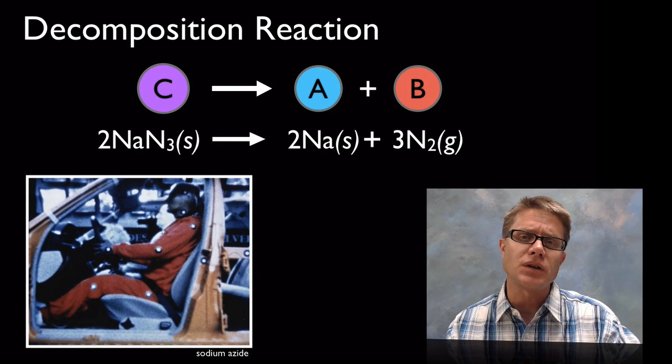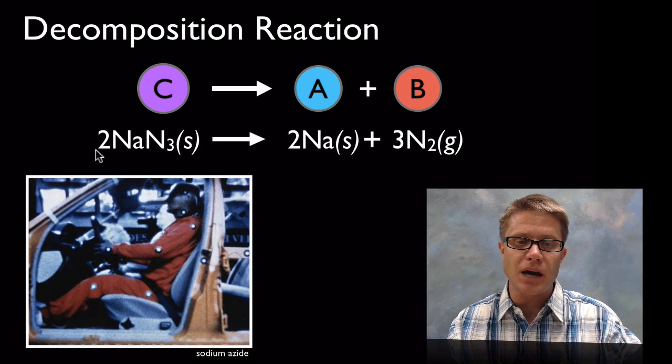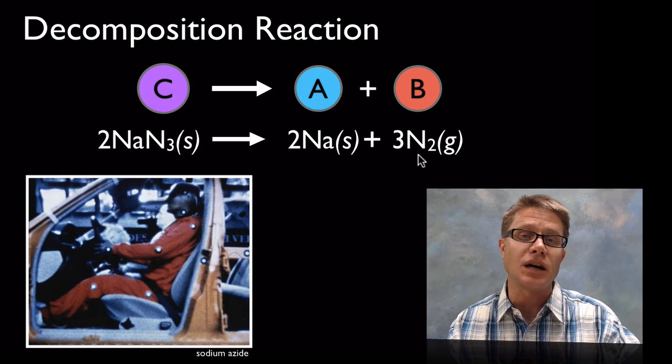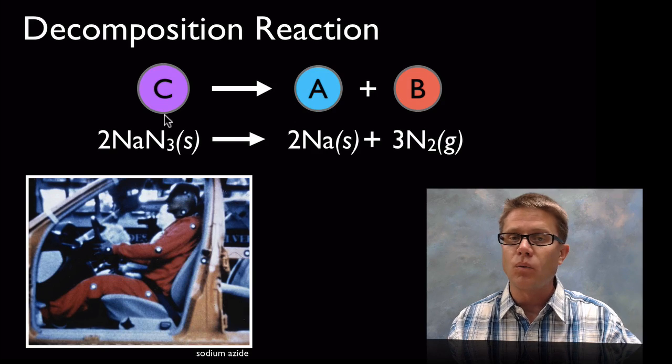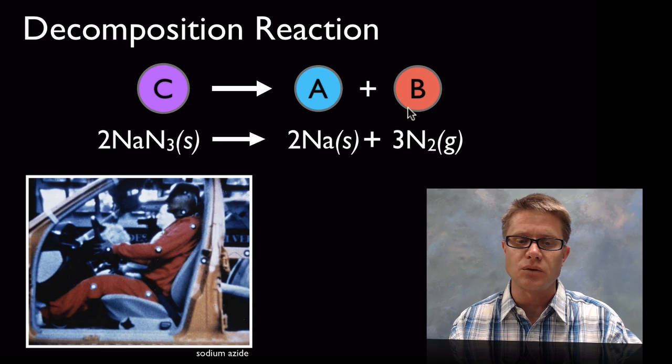What's decomposition then? It's when we're taking a compound and breaking it down. So here's an example. If we take sodium azide and break it down into sodium metal and nitrogen gas, that would be a decomposition reaction. So if we have one reactant and two products, it's a good idea that this is probably a decomposition reaction.